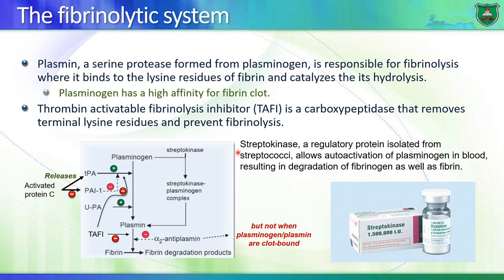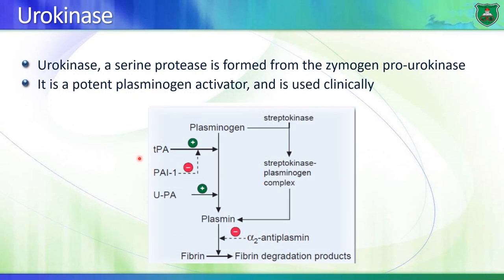Streptokinase, a protein isolated from bacteria, allows for auto-activation of plasminogen into plasmin - plasminogen can activate itself. Streptokinase induces removal of the fibrin clot and is used as a treatment. Urokinase plasminogen activator also activates plasminogen to plasmin and can likewise be used clinically.